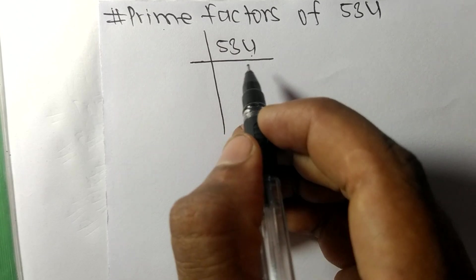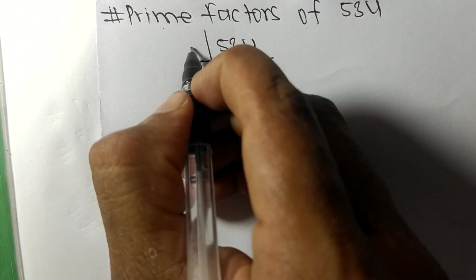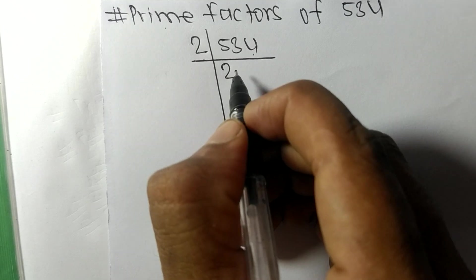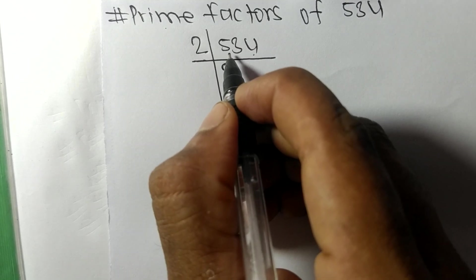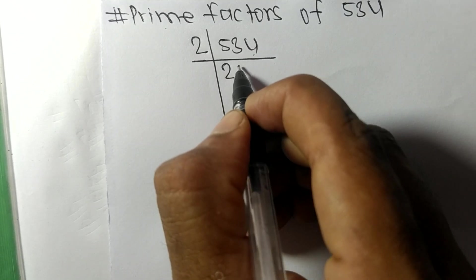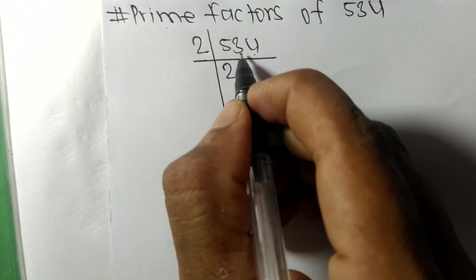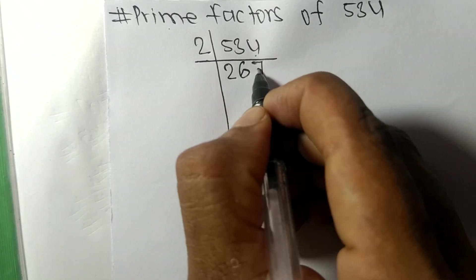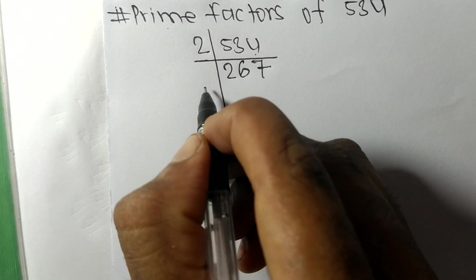Since it ends in 4, this whole number is divisible by 2. 2 times 2 equals 4, remainder 1. 1 and 3 is 13. 2 times 6 equals 12, remainder 1. 1 and 4 is 14. 2 times 7 equals 14. Now we got 267.